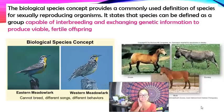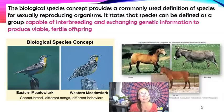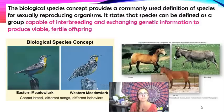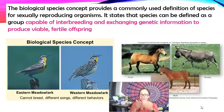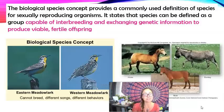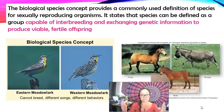For post-zygotic barriers, we see hybrid sterility — as with horses and donkeys — where the hybrid mule is viable and strong but not fertile. We also have reduced hybrid viability, where a hybrid forms but is weak and doesn't develop properly, as when sheep and goats mate. Then there's hybrid breakdown, where the F1 generation is viable and fertile, but the F2 generation breaks down and cannot continue breeding successfully. Any reason why two populations would not produce viable fertile offspring makes them different species.